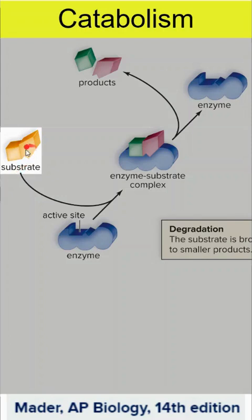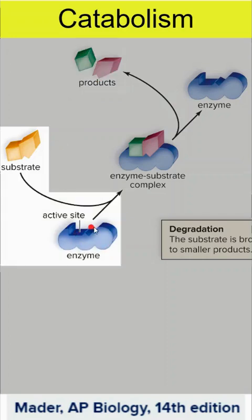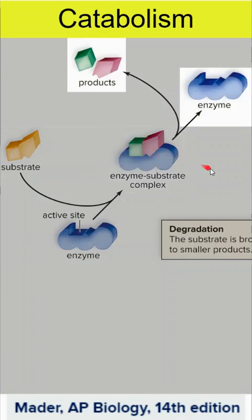Initially we look at a substrate that is going to be broken down into products — that could be a decomposition or degradation reaction. The substrate has to fit the active site of the enzyme, both shape and charge. When we have an enzyme-substrate complex and they come together, the chemical reaction can occur and we end up with products. Enzymes do not get used up in chemical reactions, so they can continue breaking down the next substrate.